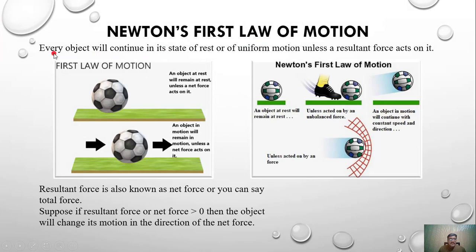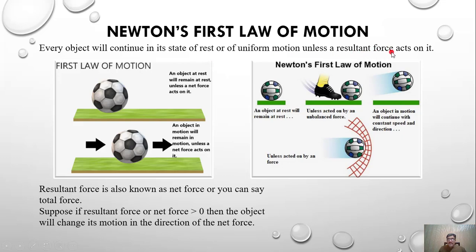Newton's first law of motion says that every object will continue in its state of rest or of uniform motion. So we are seeing two states: one is rest and the other is uniform motion. Newton's first law states that every object will continue in its state of rest or uniform motion unless a resultant force acts on it.